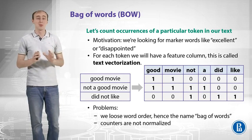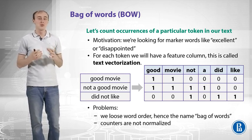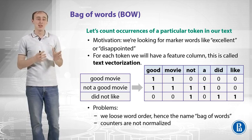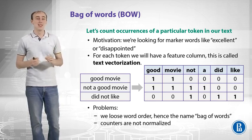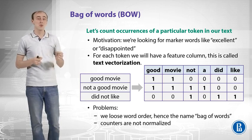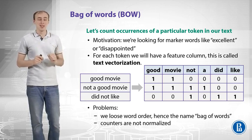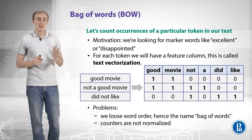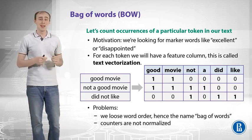Let's count occurrences of a particular token in our text. The motivation is the following: we are actually looking for marker words like 'excellent' or 'disappointed', and we want to detect those words and make decisions based on absence or presence of that particular word. Let's take an example of three reviews: 'good movie', 'not a good movie', 'didn't like'.